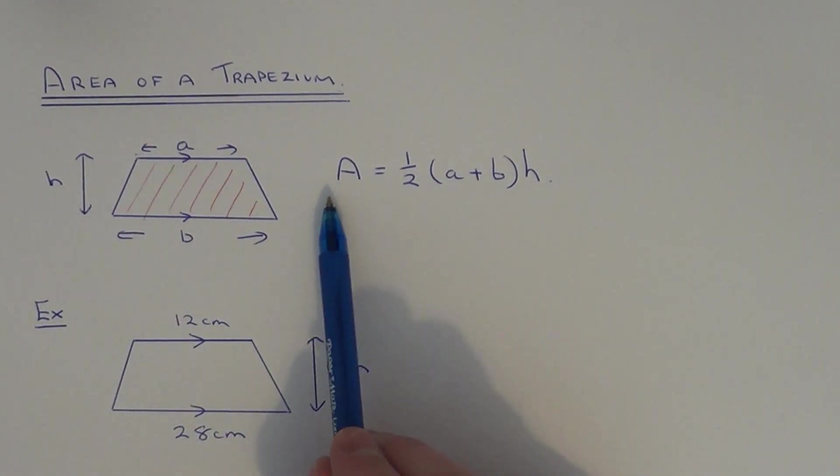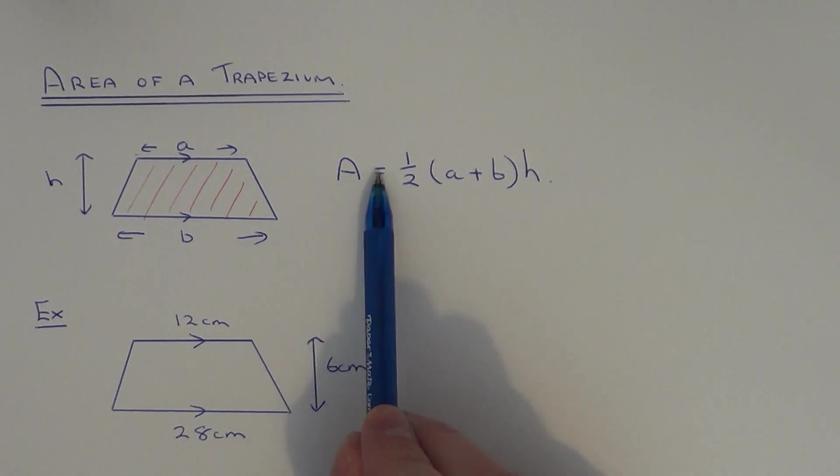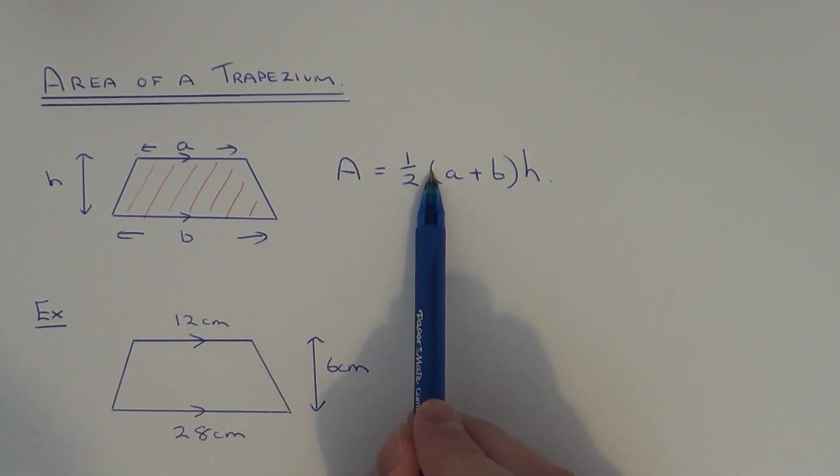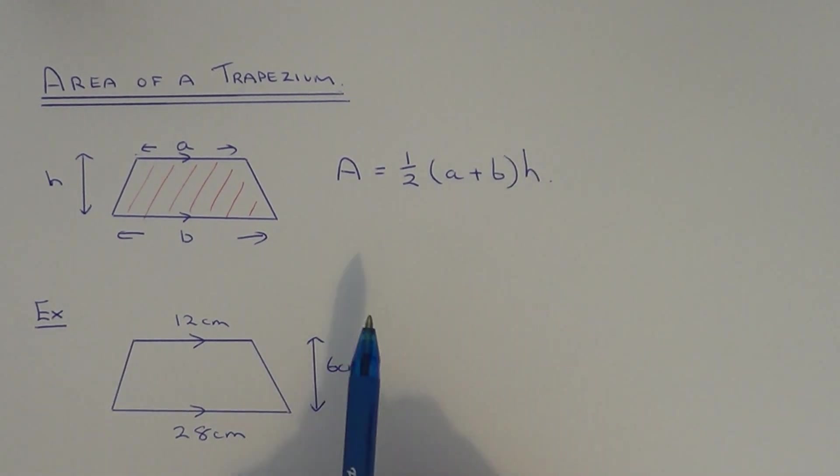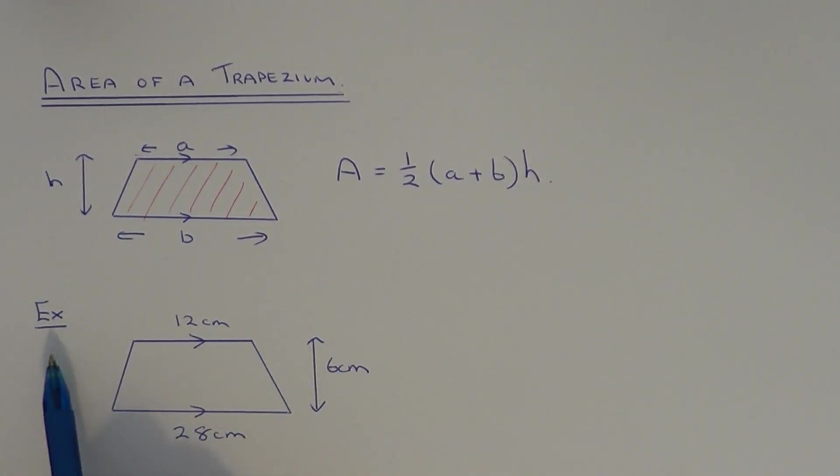In order to work out the area you can use the formula A equals a half bracket a plus b close your bracket h. So let's take a look at example one.